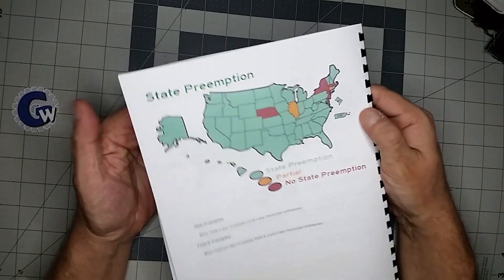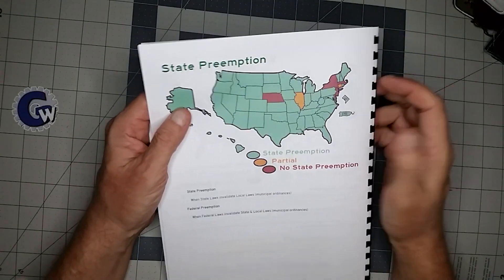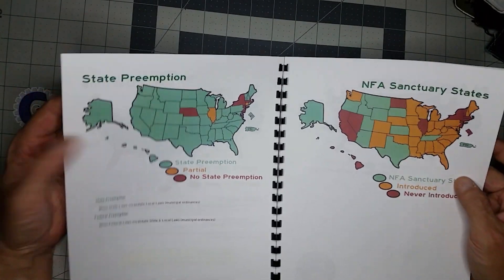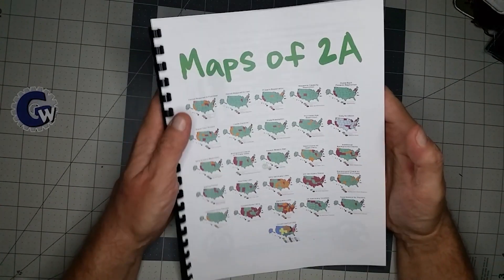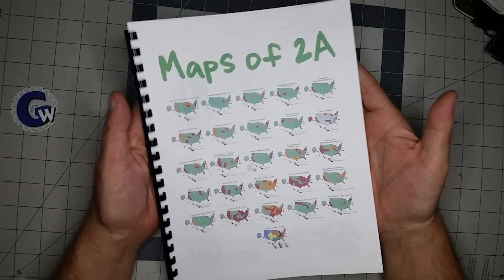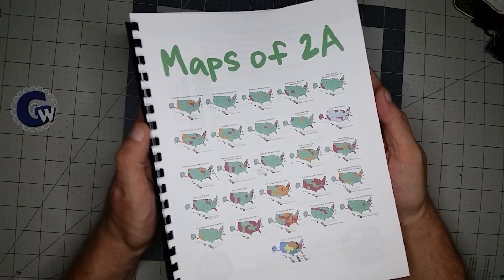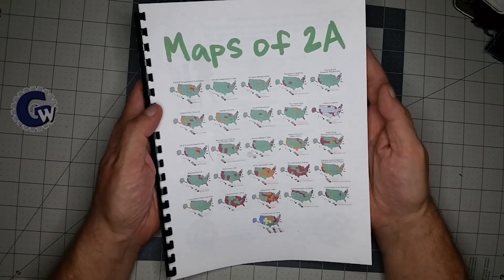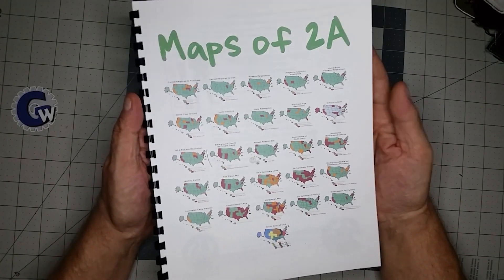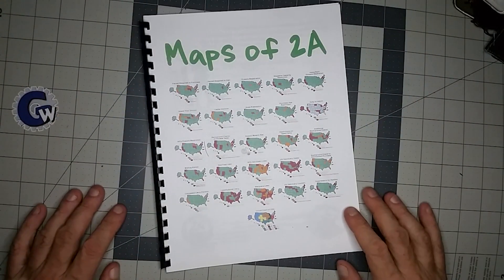That's all there is to this one — it's not going to be a long video. As always, if there are any errors, please let us know. But to the best of our ability, these maps are accurate. They're really there to add something to our conversations, to illustrate, and to help educate people about our various topics about 2A.